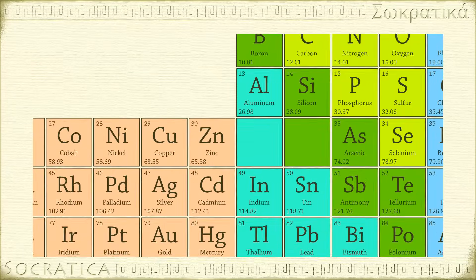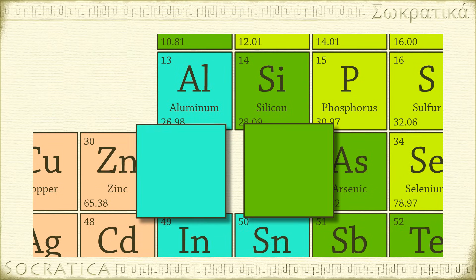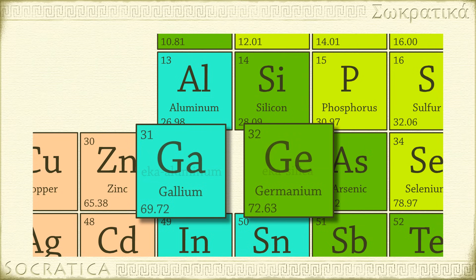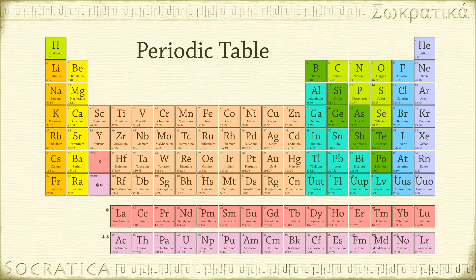Mendeleev insisted that elements with similar properties be listed together, and because of this there were gaps in his table. He boldly proposed the existence of a number of elements that had not yet been found but would one day fill in these gaps, naming them for their positions in his table. For example, the proposed element eka-aluminum would reside under aluminum, and eka-silicon would go under silicon. Some years later, these elements were indeed found, and their characteristics closely matched Mendeleev's predictions — a powerful example of the utility of his periodic table as a predictive tool, something chemists didn't have before.